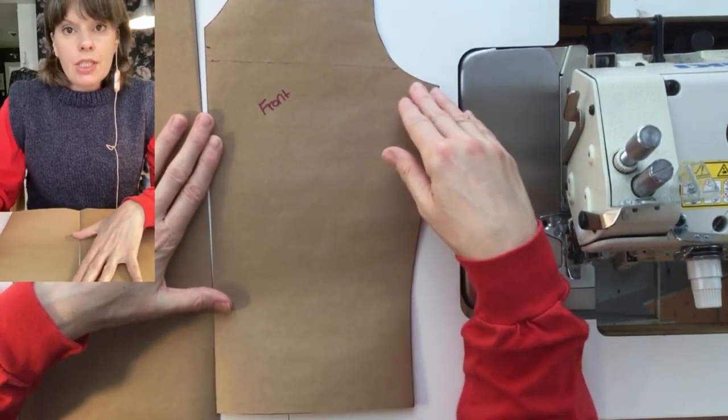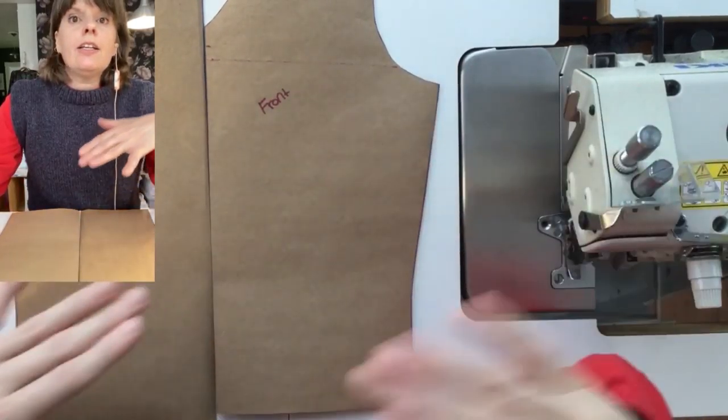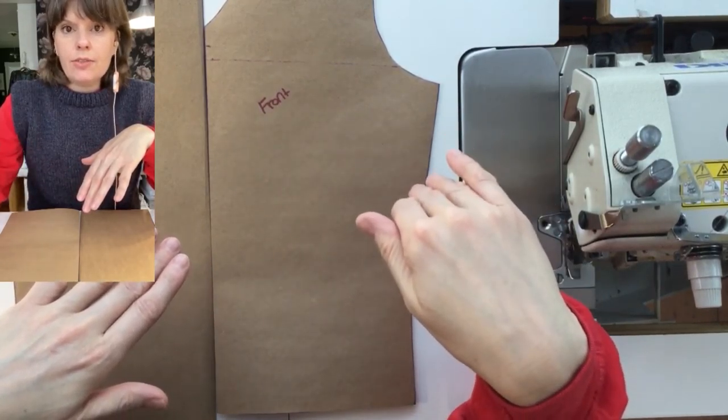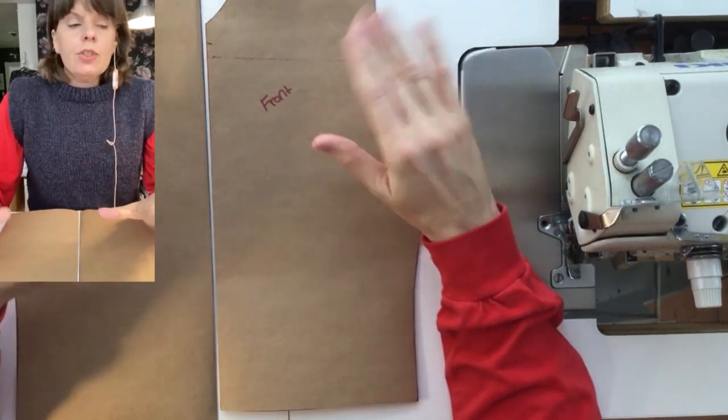So you'll mark out these changes to the front and back and the front and back underlay and then also lay that over your stable layer patterns and change the curves on them as well. So I'm just going to show you what I would do.